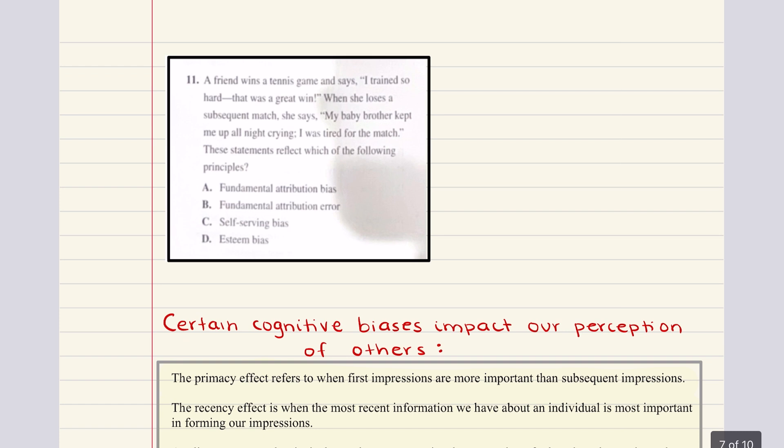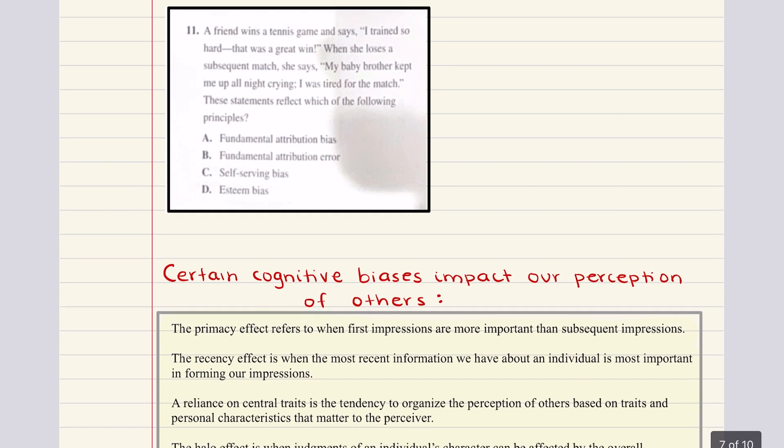11 says, a friend wins a tennis game and says, I trained so hard. That was a great win. When she loses a subsequent match, she says, my baby brother kept me up all night crying. I was tired for the match. These statements reflect which of the following principles, fundamental attribution bias, fundamental attribution error, self-serving bias.